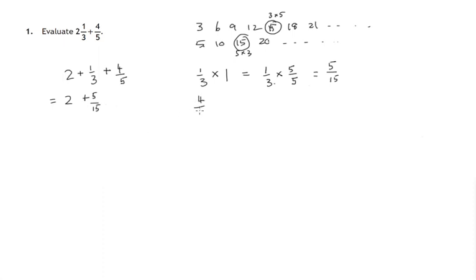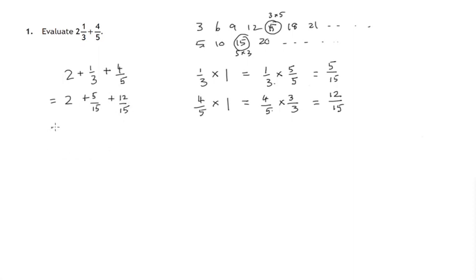And then similarly for four fifths, multiply top and bottom by three. The reason we can do that is because if we multiply four fifths by one, written in the shape of three thirds, it doesn't change its value. Four times three, five times three. So we're rewriting four fifths as twelve fifteenths. And now we do have the same number in the denominator — they're both in terms of fifteenths.